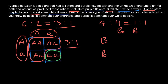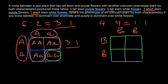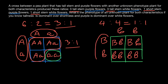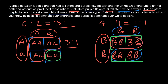The other plant, in order to produce a one to one ratio, must be homozygous recessive. If we build a simple Punnett square with capital B small b crossed with small b small b, we get capital B small b, capital B small b, small b small b, and small b small b — that is, 50% purple and 50% white, the same ratio we see here.